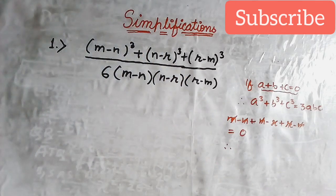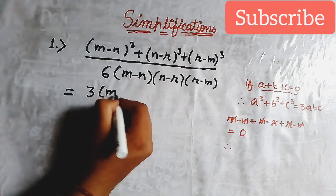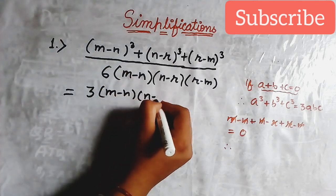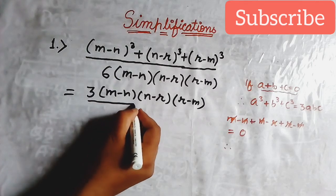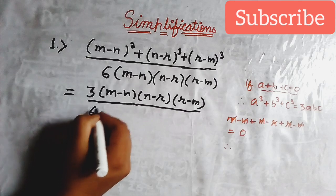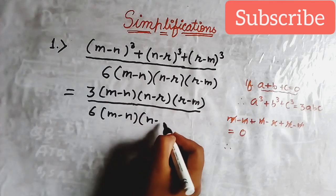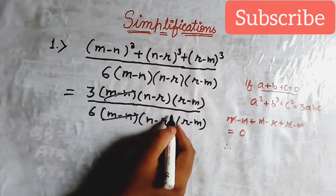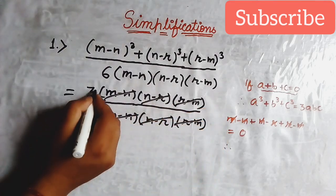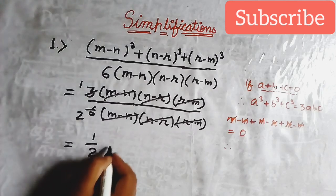Since the sum equals 0, the numerator becomes 3 multiplied by a=(m minus n), b=(n minus r), c=(r minus m), all over 6 multiplied by (m minus n)(n minus r)(r minus m). Cancel the same expressions in numerator and denominator. 3 over 6 simplifies to 1 over 2, so the answer is 1/2.